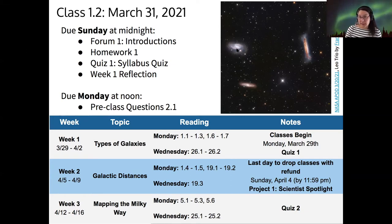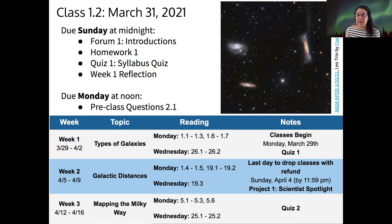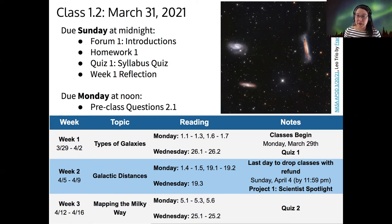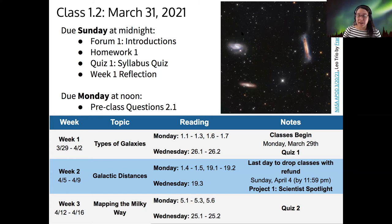My picture of the day is the Leo Triplet. Some of you from 122, if Leo was your constellation, you might recognize it. There are three galaxies in the direction of the sky in the constellation we call Leo. This was taken by an amateur astronomer and was the NASA Astronomy Picture of the Day a few days ago. If you're not familiar with NASA APOD, check it out — there's cool stuff all the time, and they also have an Instagram.